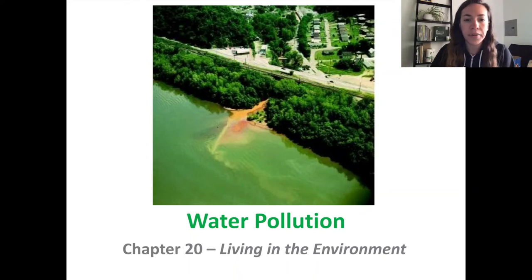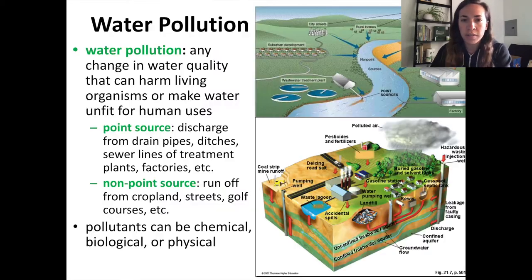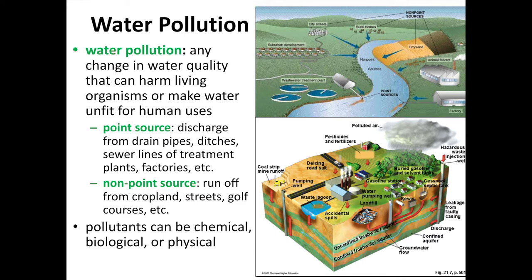Hi everybody! Today's video is going to be covering chapter 20 of Living in the Environment, which will talk about water pollution. Water pollution is defined as any change in water quality that can harm living organisms or otherwise make water unusable for human uses. This covers both environmental hazards and human health hazards.